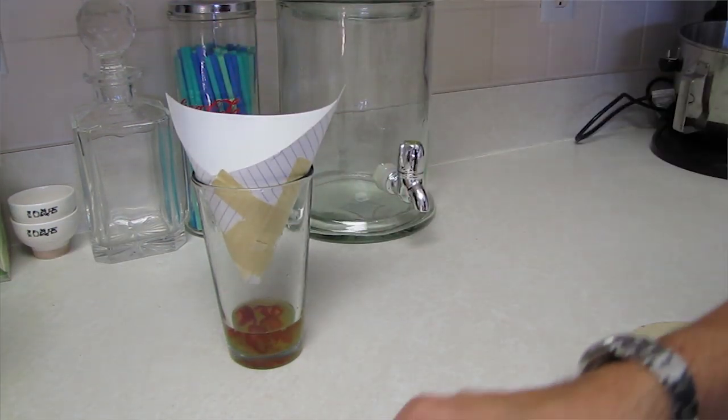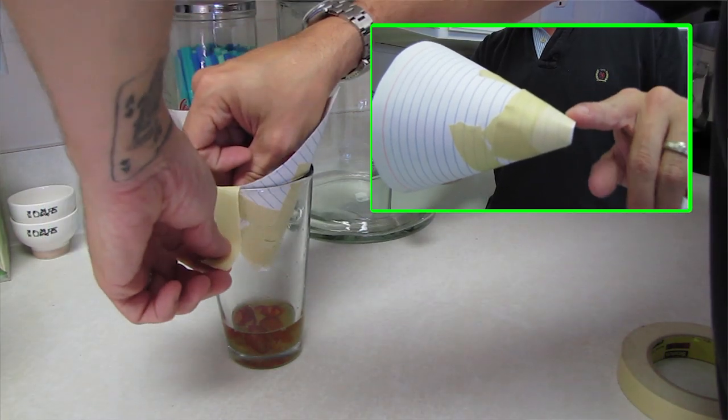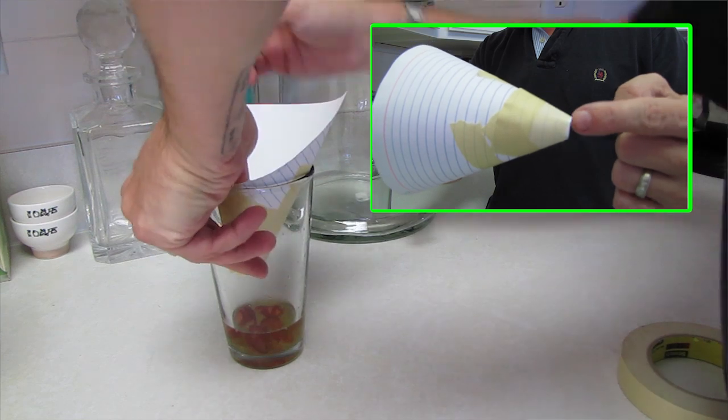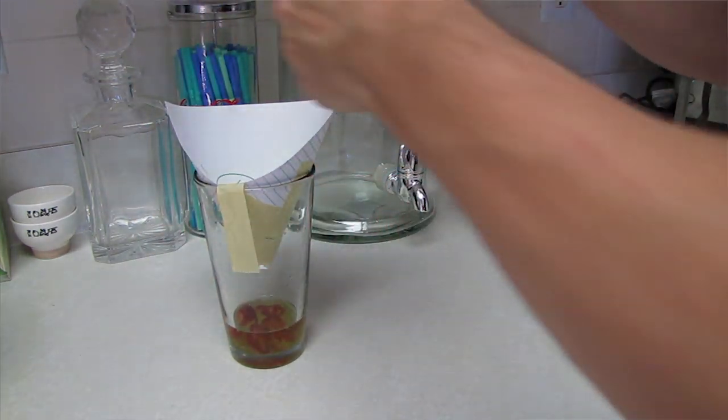And if you notice on the funnel, I actually put masking tape backwards around the edge, so if the fruit flies fly in and start crawling around on the cone on the inside, they won't crawl back up to get back out.